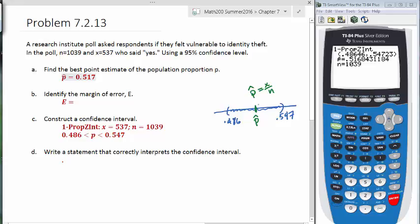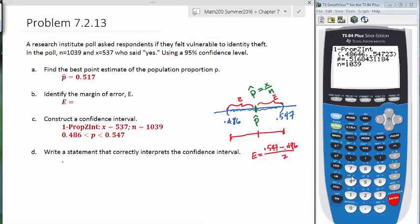Our margin of error is going to be a distance from the middle to one of the endpoints. So this is one margin of error. This is another margin of error. So unfortunately, our one prop Z-int doesn't give that to us exactly. But what we can do is we can find this distance and then cut that in half. So to find a distance, we need to subtract 0.547 minus 0.486. And then we'll divide that whole thing by 2. And that's going to be your margin of error. So let's punch that in our calculator.